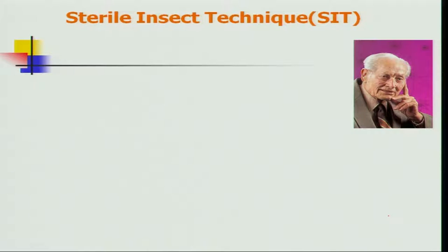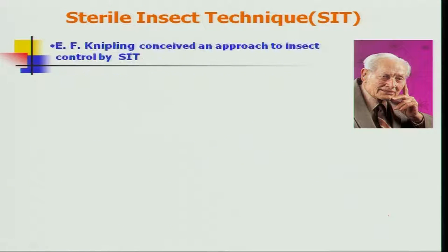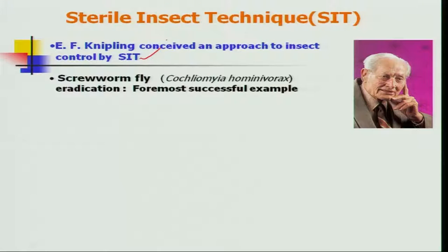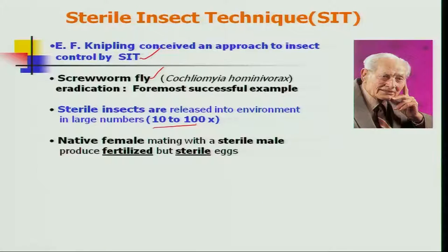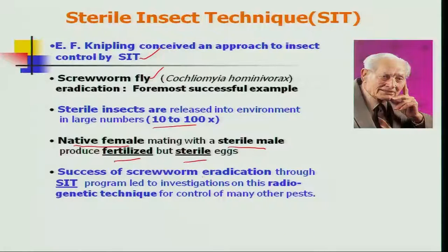The sterile insect technique was first conceived by Professor Knipling. He is mainly responsible for showing the world the successful case of screw worm fly management — Cochliomyia hominivorax — which is a pest on most domesticated animals. He released sterile male insects at 10 to 100 times the wild population, observing that sterile males mated with native females producing fertilized but sterile eggs. Ultimately, by the fifth generation, he achieved almost complete eradication of the screw worm from his trial area.